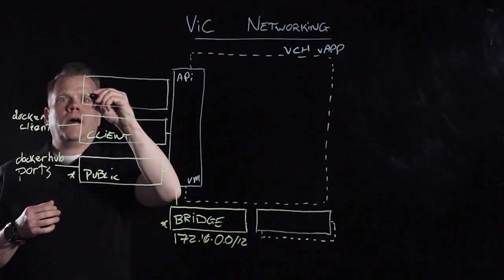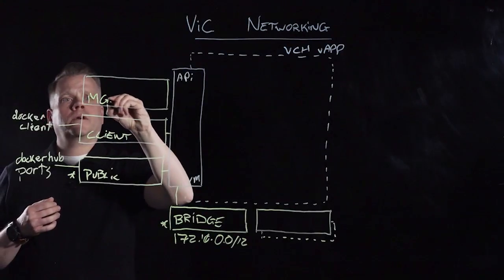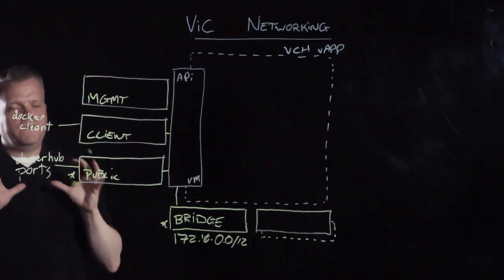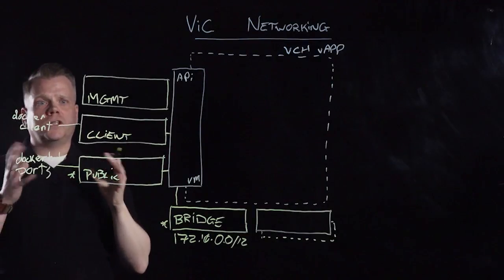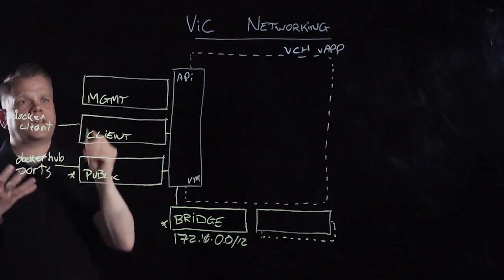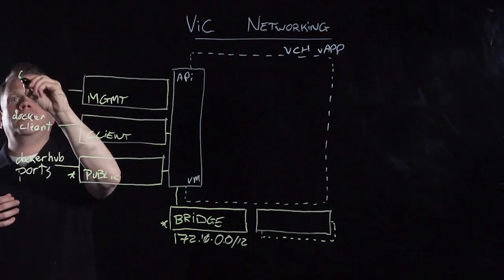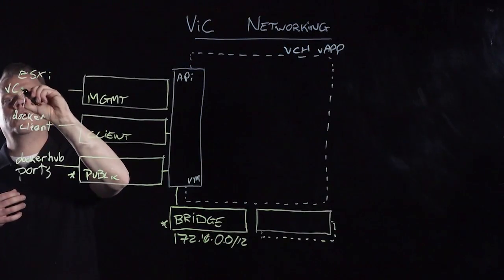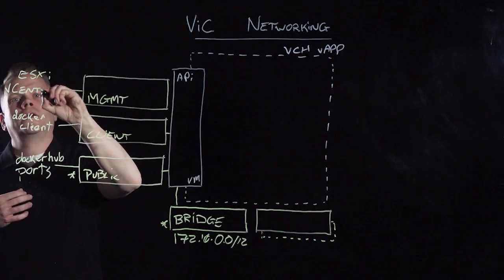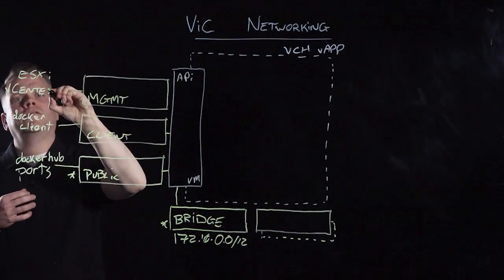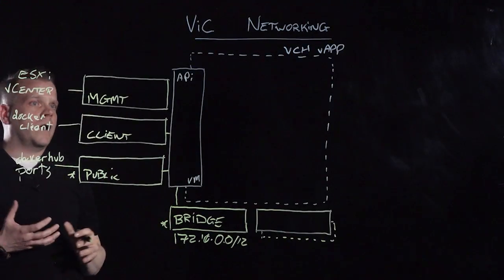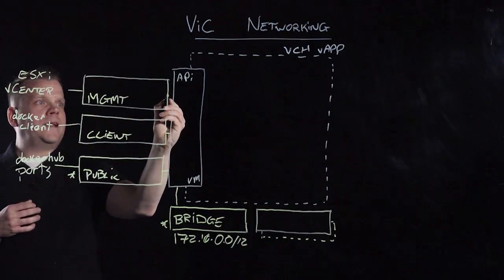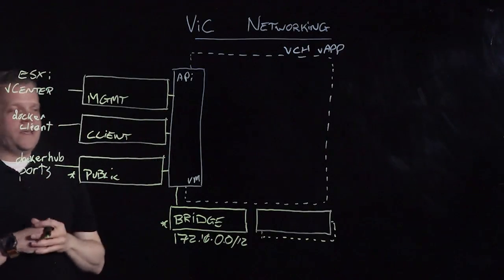The third network is the management network. In a typical vSphere production environment, the management network is segmented because it's used to communicate with your vSphere resources like your ESXi hosts or your vCenter server. So in a typical vSphere enterprise production environment this network will be segmented out, and we allow you to segment it out as well when you provision the VCH.